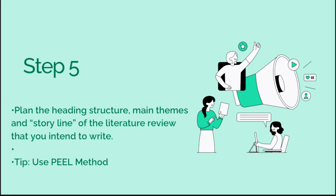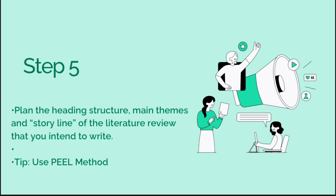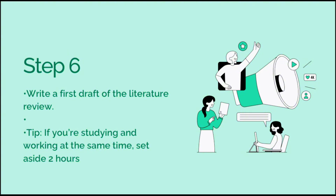The last steps involve actually writing your paper. You've gathered all the data and journal articles, so plan your heading structure and main themes, and use the PEEL method — Point, Example/Evidence, Explain, Link — always maintaining that golden thread and storyline. Steps six and seven are about setting aside time: at least two hours if you're working and studying at the same time.